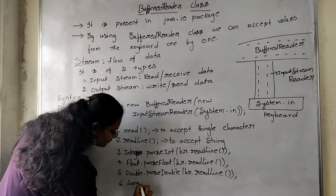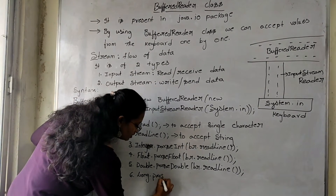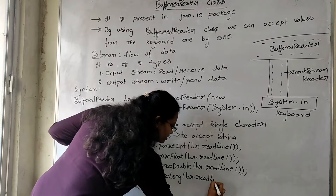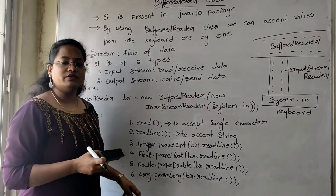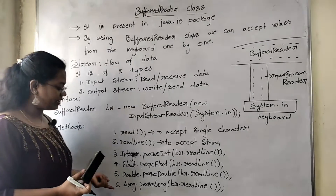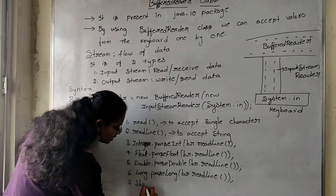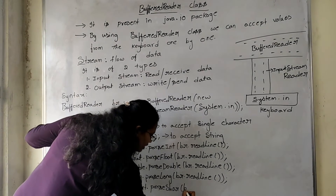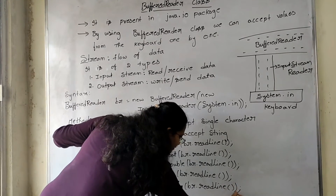For Long type of data, use Long.parseLong(br.readLine()). This is the method to accept a long value from the keyboard. Where can we use Long? For example, if you want to accept any phone number or bank account numbers, the integer range is not enough — that is the reason we use Long. And if you want to take any short value, use Short.parseShort(br.readLine()). These are the methods you can use to accept values from the keyboard.